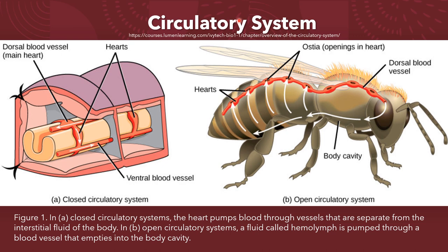An open circulatory system does not use as much energy as a closed circulatory system to operate or maintain. However, there is a trade-off with the amount of blood that can be moved to metabolically active organs and tissues that require high levels of oxygen. In fact, one reason that insects with wingspans of up to 2 feet wide are not around today is probably because they were out-competed by the arrival of birds 150 million years ago. Birds, having a closed circulatory system, are thought to have moved more agilely, allowing them to get food faster and possibly to prey on the insects.